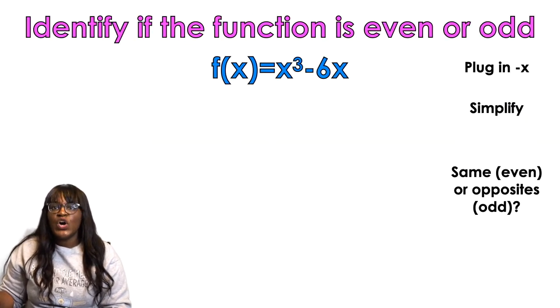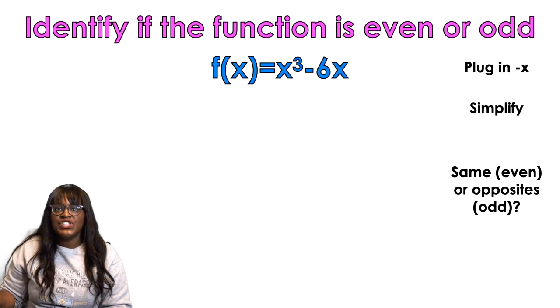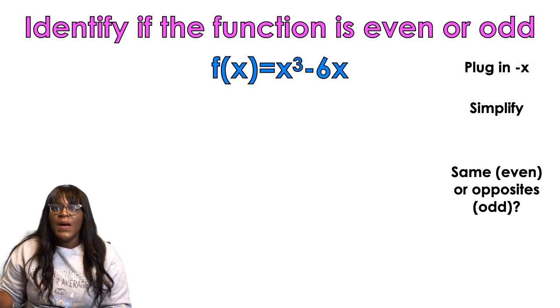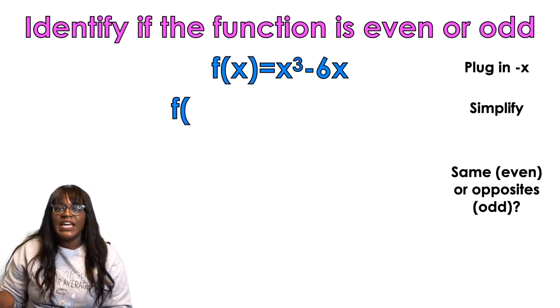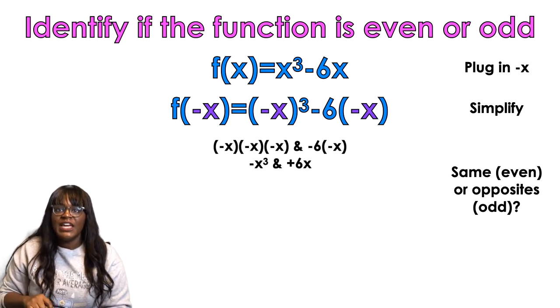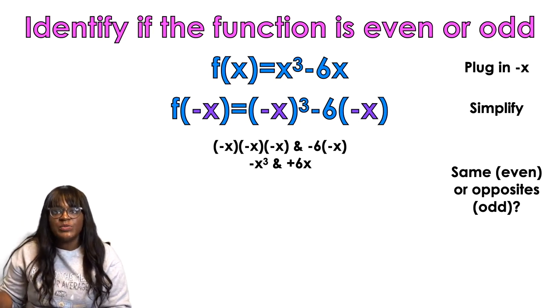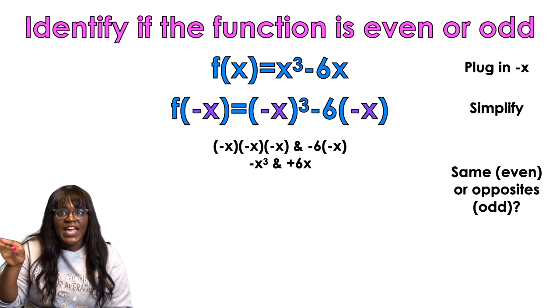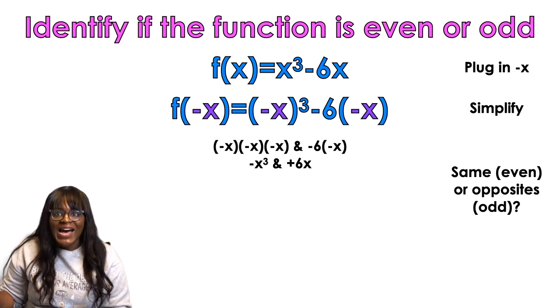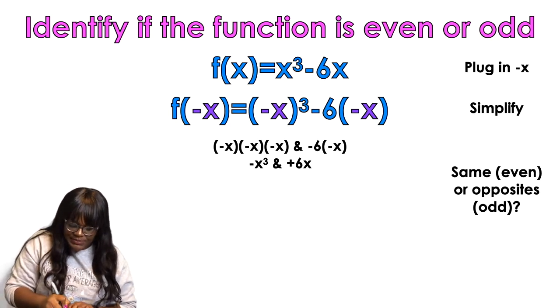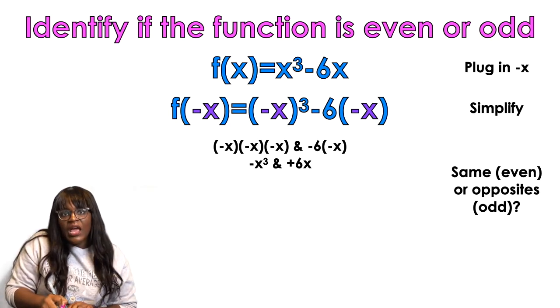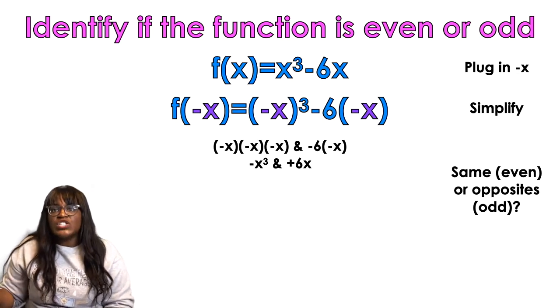If that happens, that means that it is an odd function. So what does that mean? So we're going to identify even and odd functions. f of x equals x cubed minus 6x. I'm going to plug in negative x in for all of the x's. So when I plug in negative x and cube it, that means I'm going to get negative x times negative x times negative x. Well, that's like negative 1 times negative 1 times negative 1.